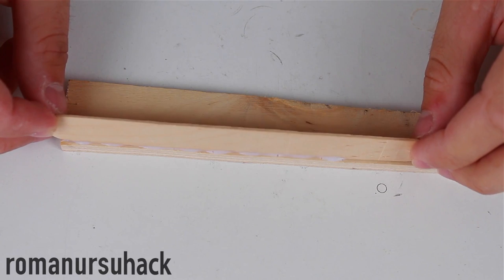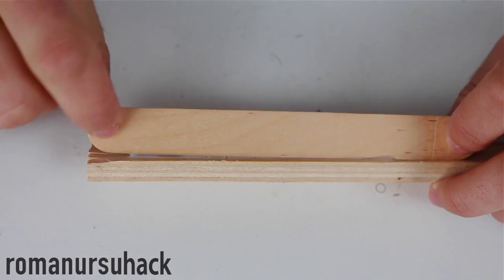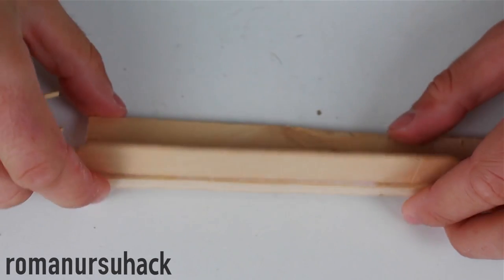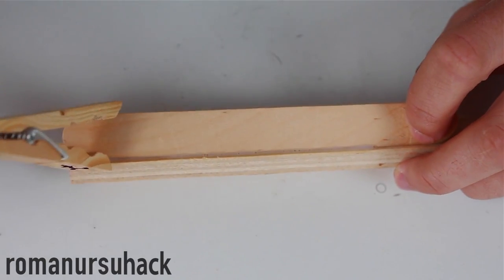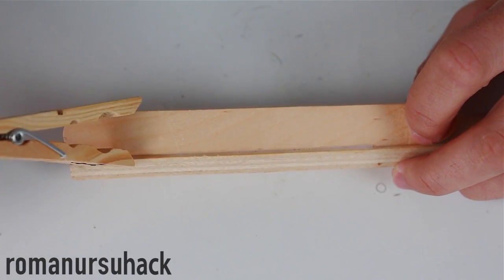And last but not least, the third idea. If you decided to glue something, but you don't have a suitable clamp, then try using a pin. But, as always, it's not that simple. What if the pin is too small?